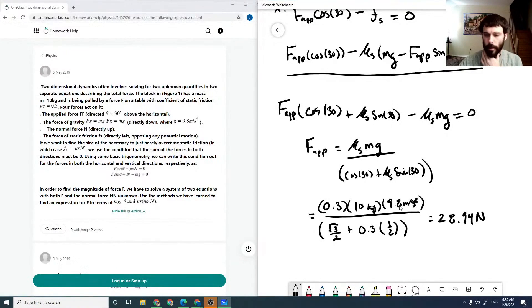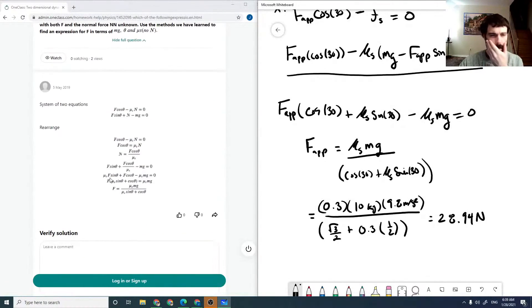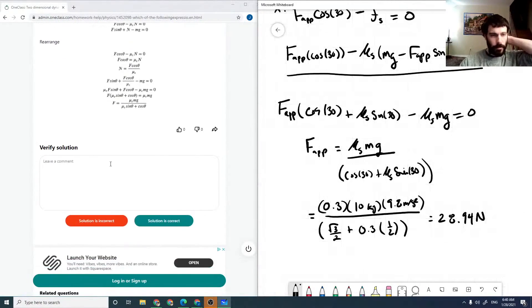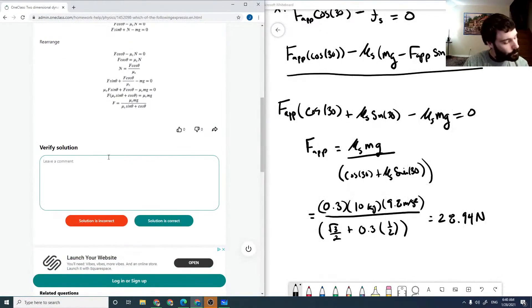All right, so there's our applied force such that we just overcome our static friction. So if we check through the solution here, we've got two equations we arranged, we eventually come to this equation, which looks the same, and they actually didn't finish it either. So I'm just going to say for this final solution, F equals 28.94.